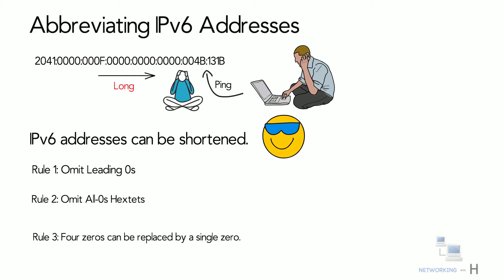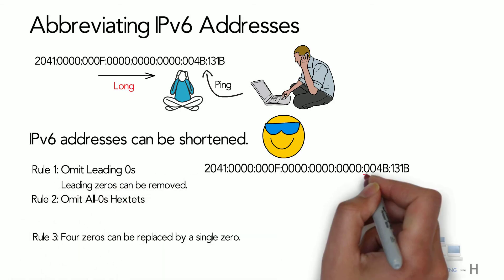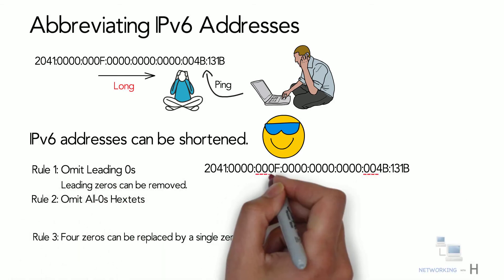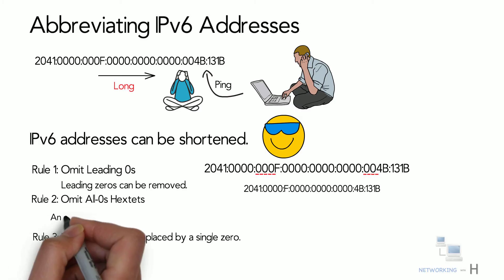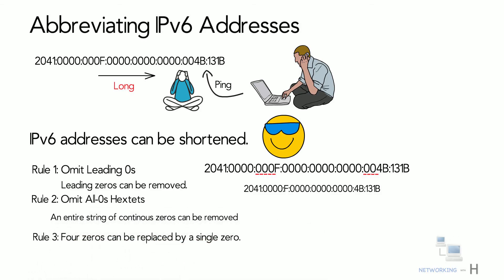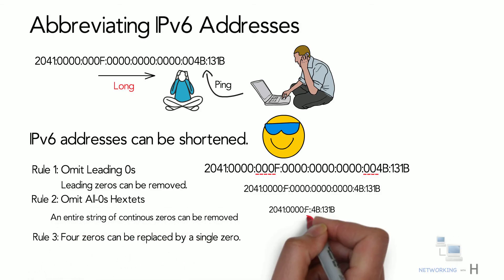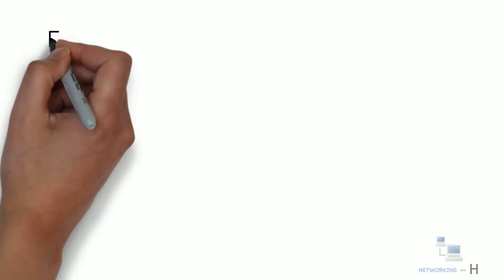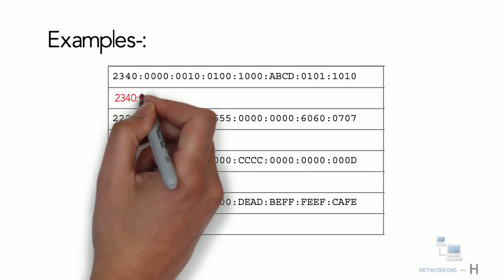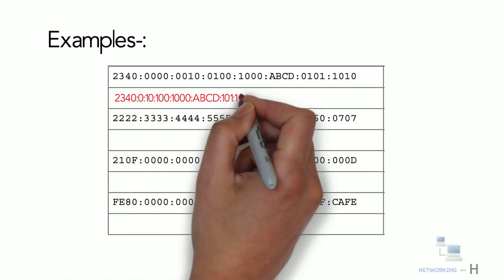Let us use an example address and apply the rules. First, leading zeros are removed. After removing the leading zeros, apply the second rule: an entire string of zeros can be removed and replaced by a double colon — but you can do this only once. Then apply rule three, where four consecutive zeros can be replaced by a single zero. Let's look at examples showing the original IPv6 followed by the shortened abbreviated IPv6 addresses.